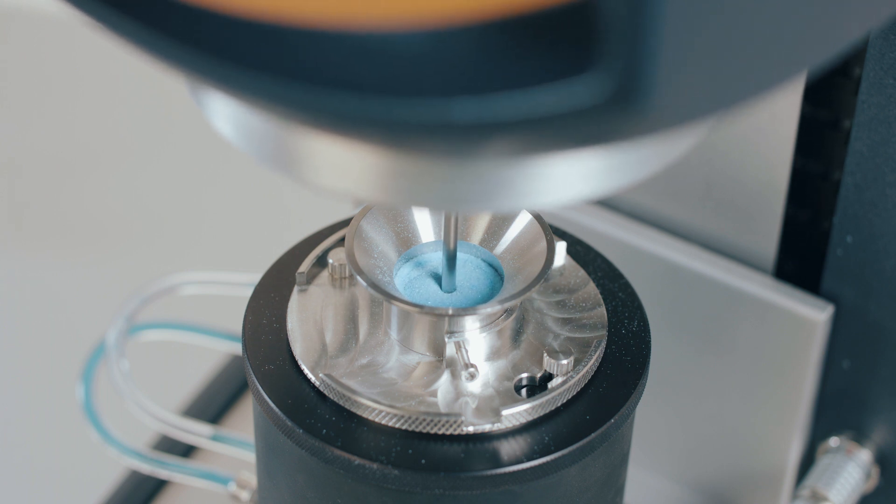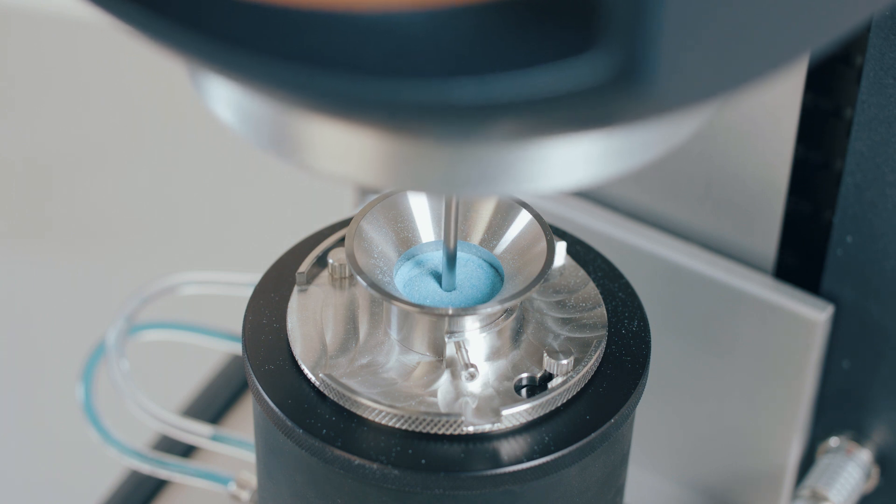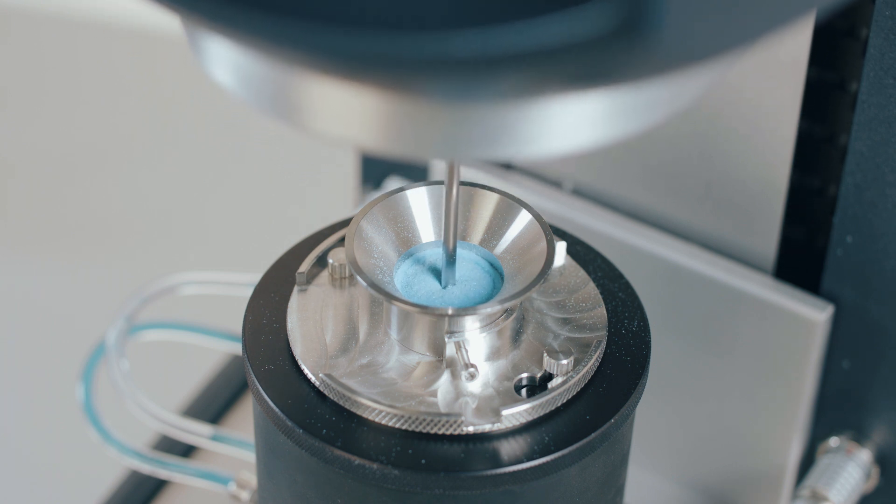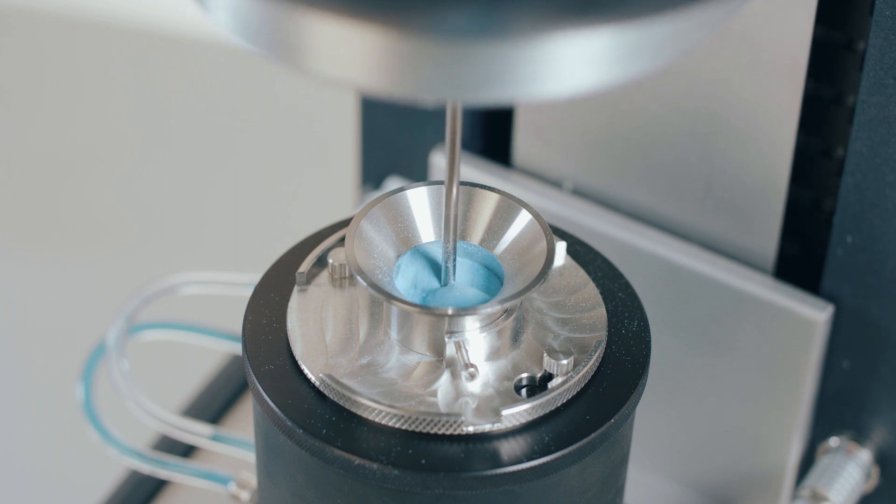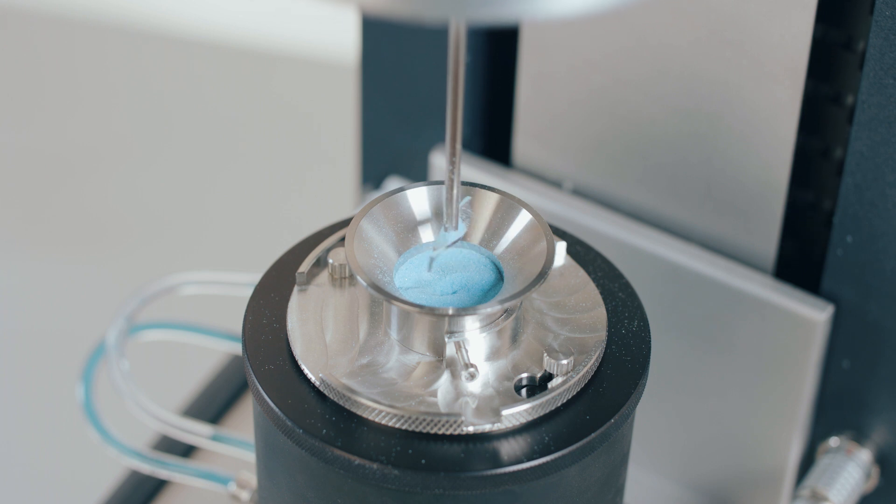The powder flow ability step performs measurements of both confined flow, driving the rotor down into the powder, and unconfined flow, raising the rotor upwards through the powder with a conditioning step between measurements. Multiple repeats of this sequence are typically used to evaluate powder stability.